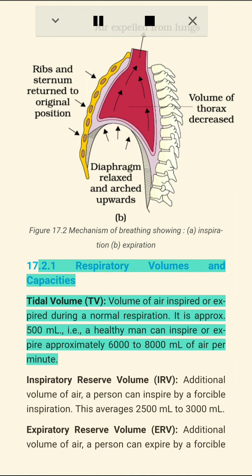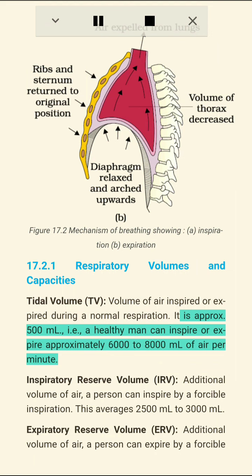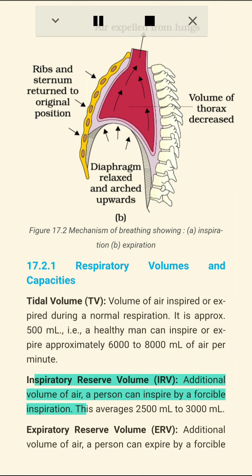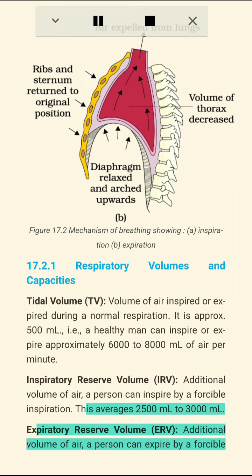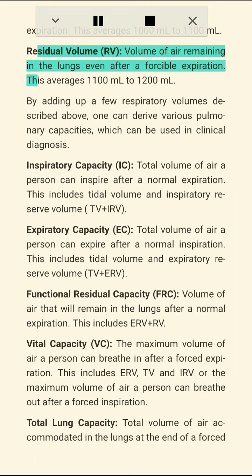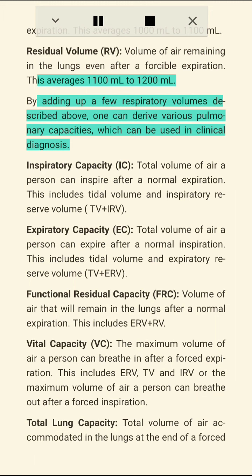Section 17.2.1: Respiratory Volumes and Capacities. Tidal Volume (TV): volume of air inspired or expired during normal respiration, approximately 500 mL; a healthy man can inspire or expire about 6,000–8,000 mL of air per minute. Inspiratory Reserve Volume (IRV): additional volume of air a person can inspire by forcible inspiration, averaging 2,500–3,000 mL. Expiratory Reserve Volume (ERV): additional volume of air a person can expire by forcible expiration, averaging 1,000–1,100 mL.